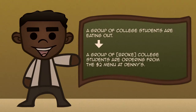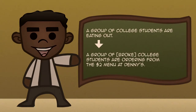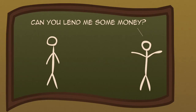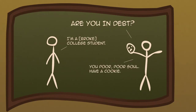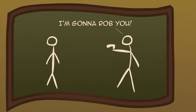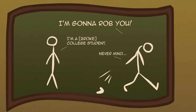But wait, there's more! The silent broke is not heard, but fully understood. This allows you to respond to expressions such as: 'Can you lend me some money?', 'Are you in debt?', and 'I'm going to rob you!' — with powerful efficiency!